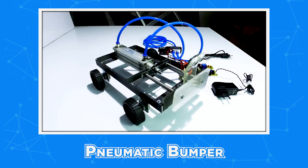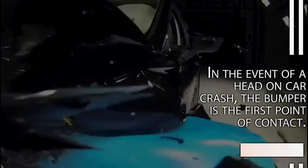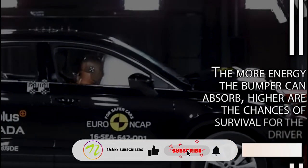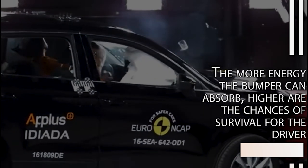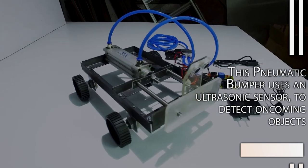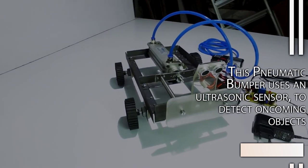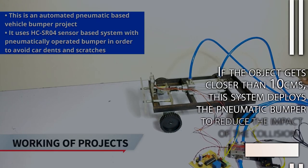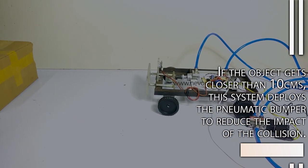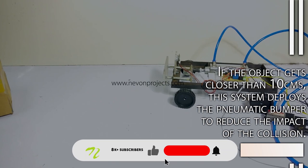Pneumatic bumper. In the event of a head-on car crash, the bumper is the first point of contact. The more energy the bumper can absorb, higher are the chances of survival for the driver. This pneumatic bumper uses an ultrasonic sensor to detect oncoming objects. If the object gets closer than 10 centimeters, the system deploys a pneumatic bumper to reduce the impact of the collision.